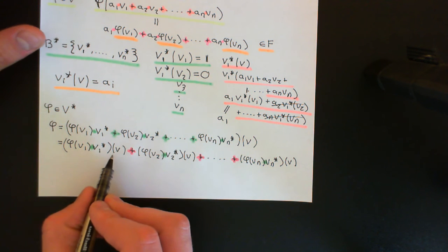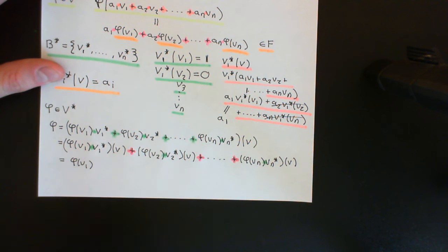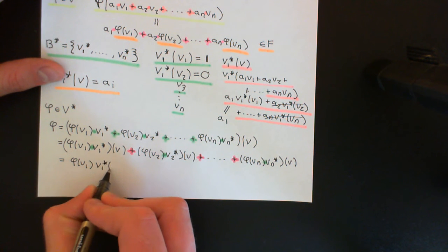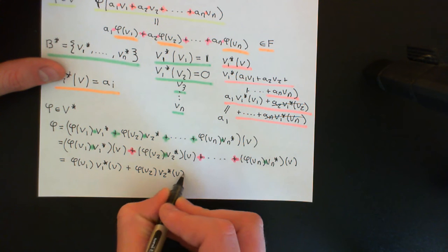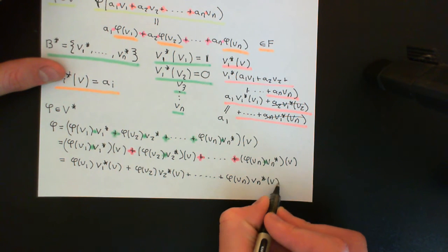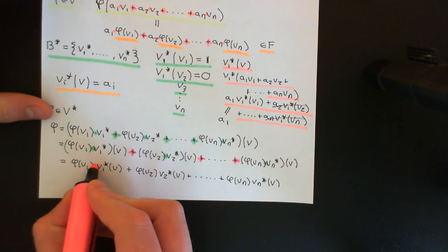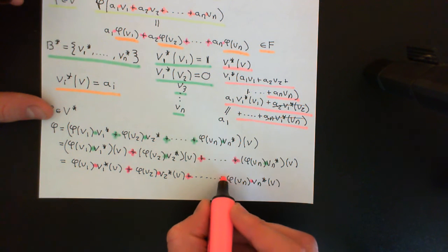Now using the definition of scalar multiplication in the dual vector space to pull out the scalars, we get phi(V1) times V1 star(V), plus phi(V2) times V2 star(V), all the way to phi(Vn) times Vn star(V). The scalar multiplications are now multiplication in the field. We know that Vi star maps any vector V onto its i-th coordinate.